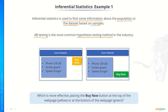There is an e-commerce website and on this e-commerce website we need to place a buy now button. We do not know where this buy now button will be more effective, so we create two versions of this e-commerce website. In the first version, we placed the buy now button at the top of the webpage as shown here. In the second version, we placed the buy now button at the bottom of the website.